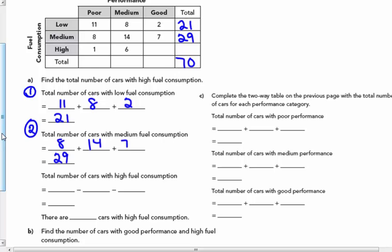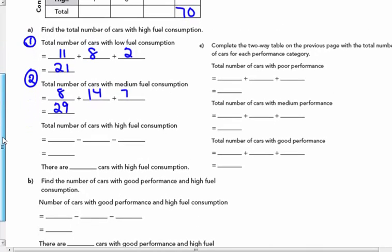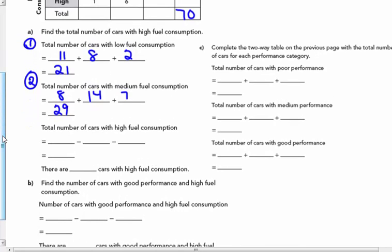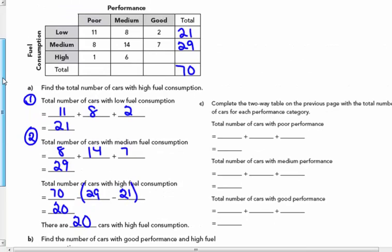Now I know that if there's 70 total cars, if I subtract the medium fuel consumption, 29, and the low consumption, 21, add those together and subtract, that's 50, I would get 20 total cars that must have high fuel consumption. Because 21 plus 29 plus 20 equals 70.